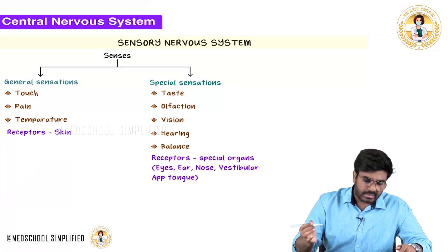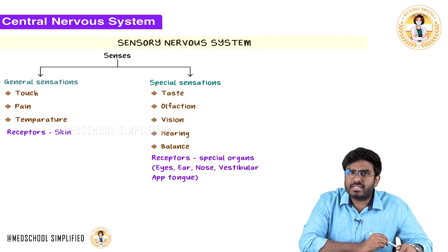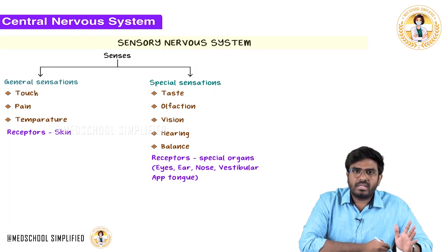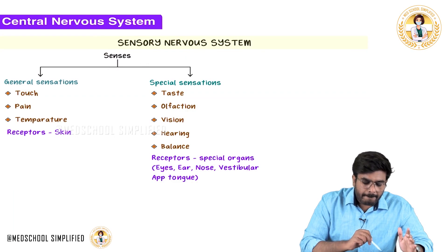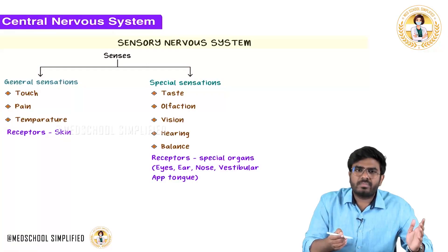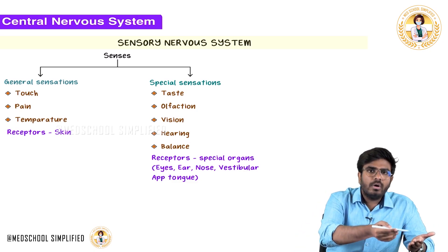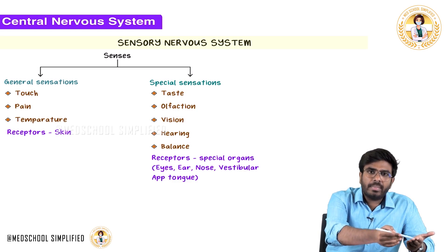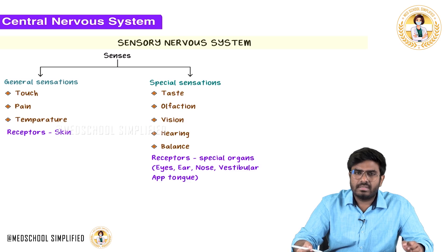Let's discuss the sensory nervous system. In the sensory nervous system, the senses are conveyed from the periphery to the central nervous system. First of all, how many types of senses are there? There are two types of senses: general sensations and special sensations.